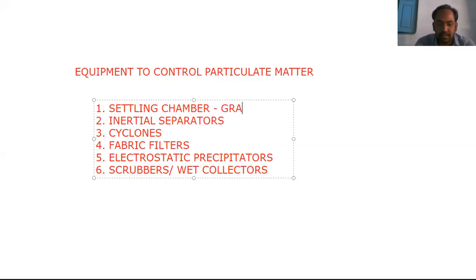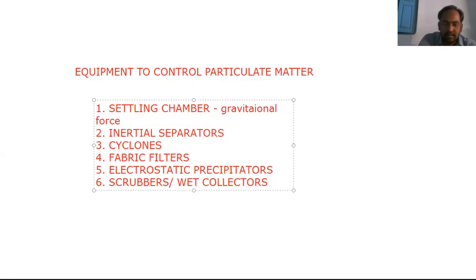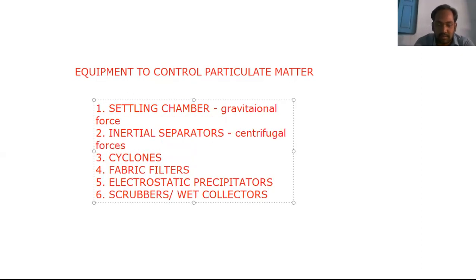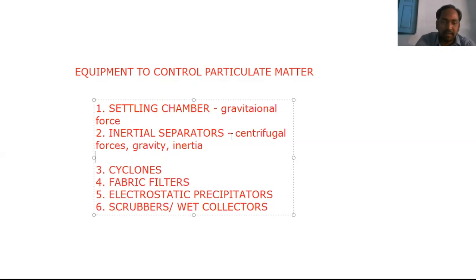In a settling chamber, we use gravitational force to cause settlement of particulate matter and then separate them. In an inertial separator, we use a combination of three forces to make the separation of particulate matter from polluted gas streams — centrifugal force, gravity, and inertia. By applying these three forces on the polluted gas stream inside a chamber, we can separate the particulate matter.